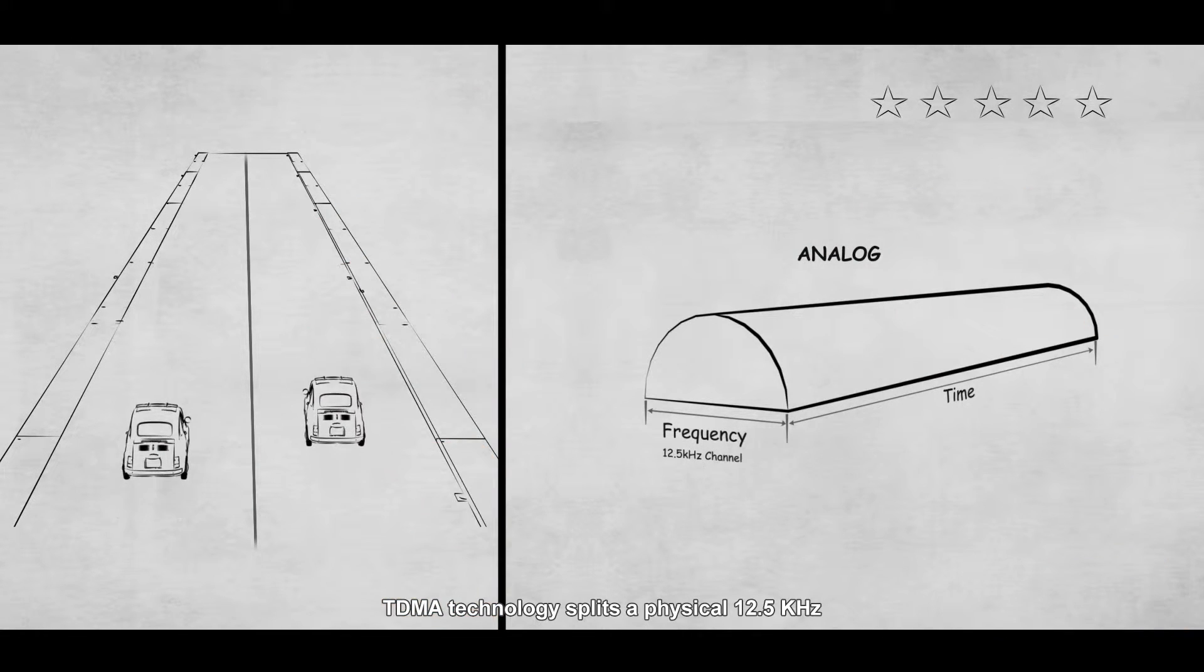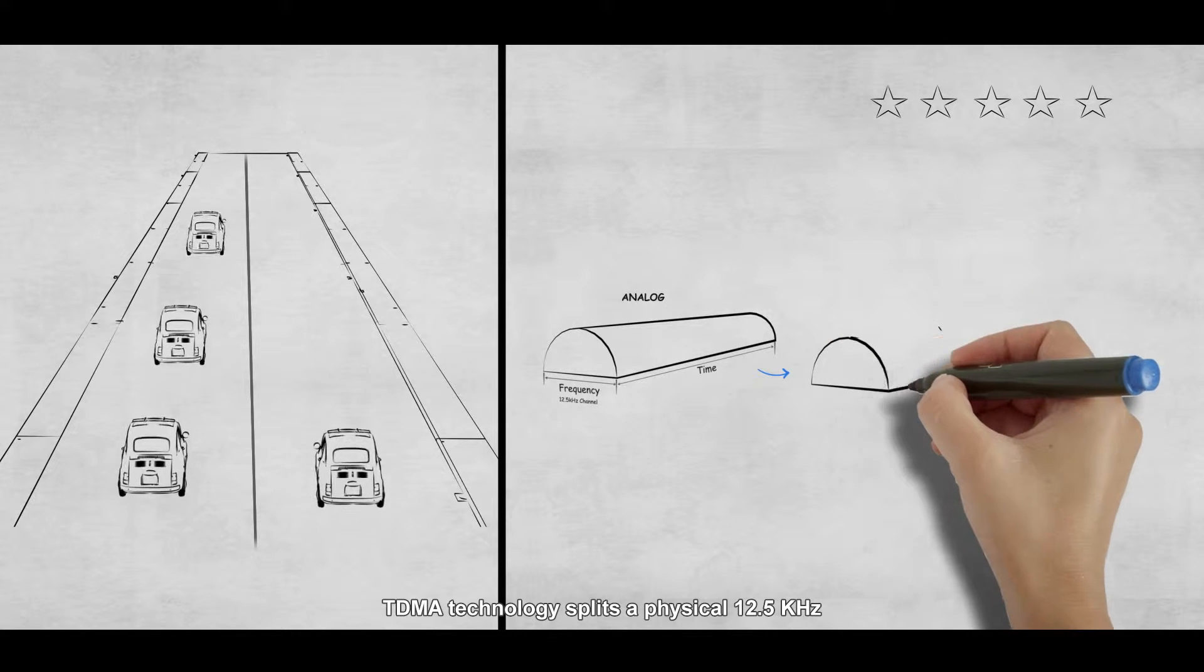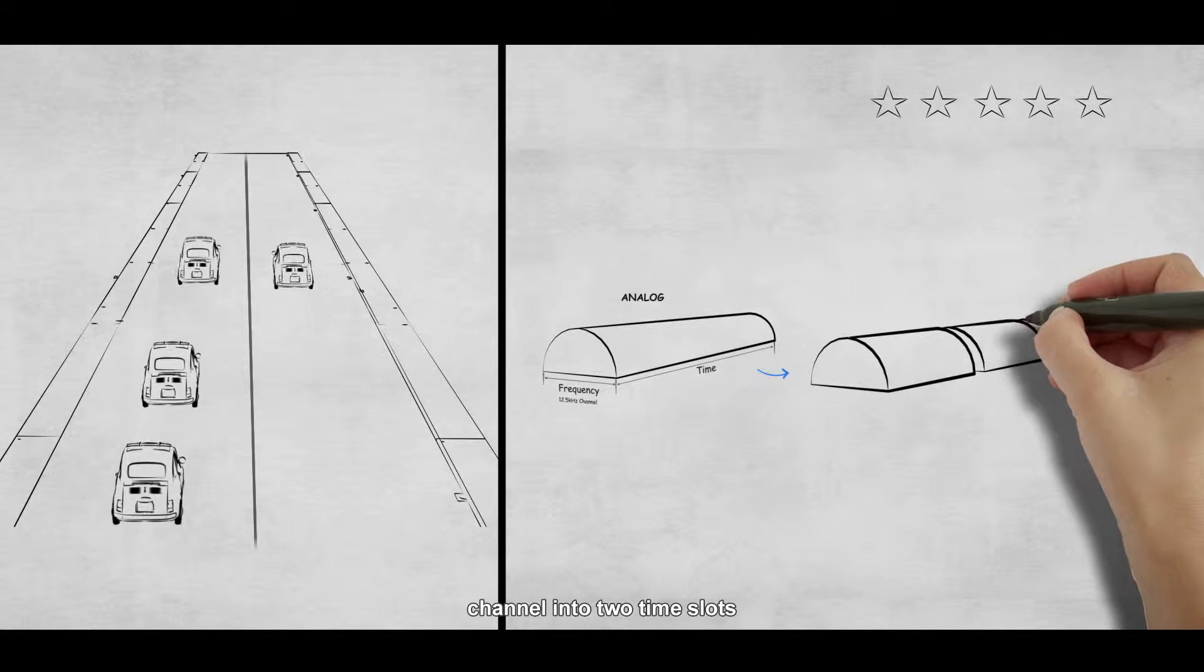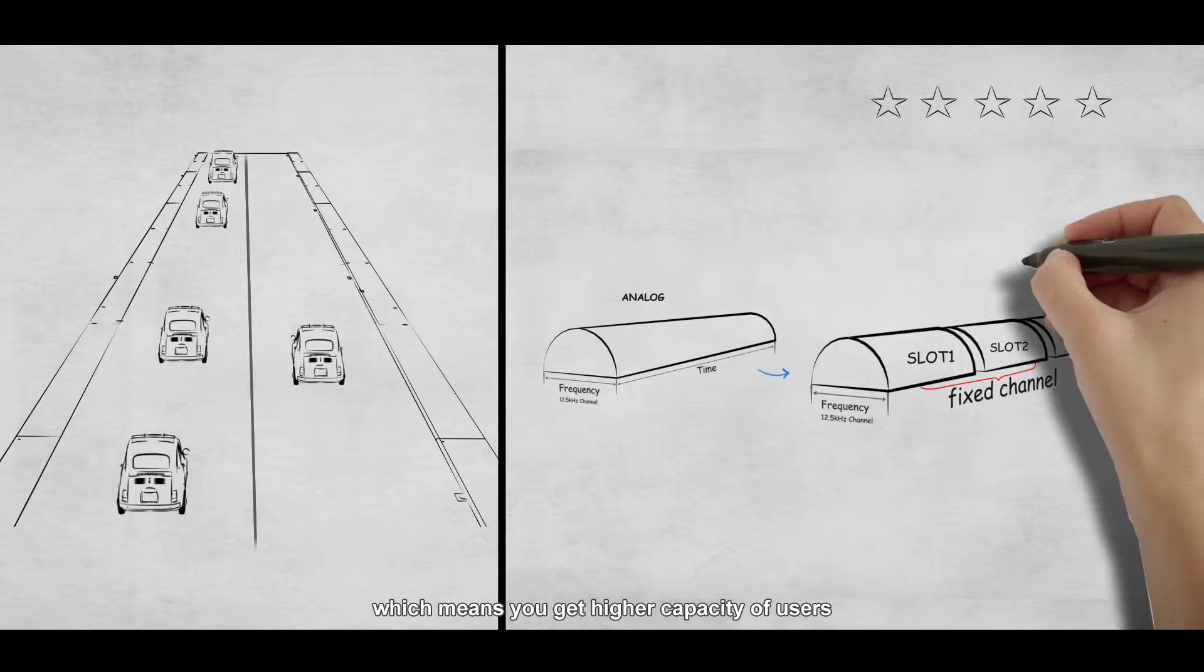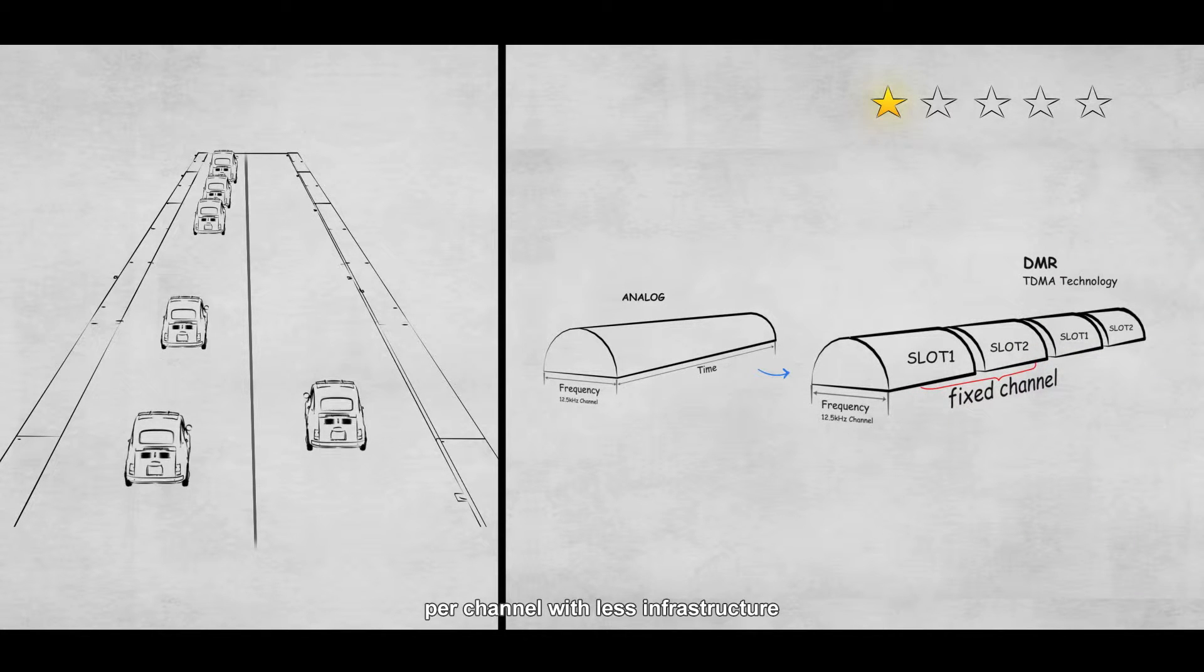TDMA technology splits a physical 12.5 kHz channel into two time slots, which means you get higher capacity of users per channel with less infrastructure.